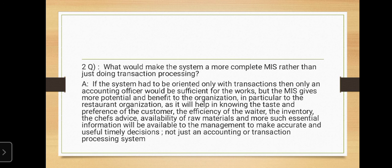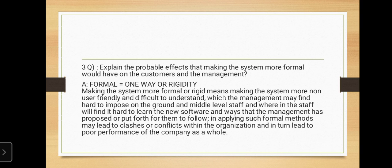The second question asks what would make the system a more complete MIS rather than just doing transaction processing. If the system were oriented only toward transactions, then only an accounting officer would be sufficient. But the MIS gives more potential and benefit to the organization — it helps in knowing the taste and preference of the customer, the efficiency of the waiter, the inventory, the chef's advice, availability of raw materials, and more, enabling management to make accurate and timely decisions.